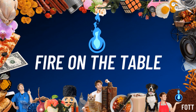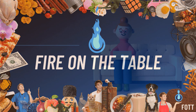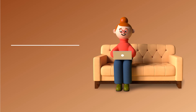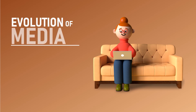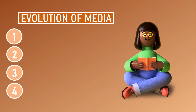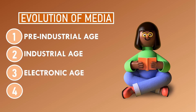Hello and welcome to another episode of Fire on the Table, where the hottest topics are served. We're going to be continuing the discussion about the evolution of media from traditional to new media from the previous episode. We were able to know that we have the pre-industrial age, industrial age, electronic age, and the information age in the evolution of media. Now we will be focusing on our third part, which is the electronic age.